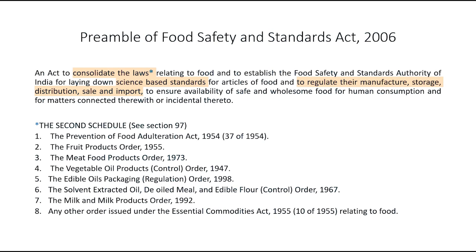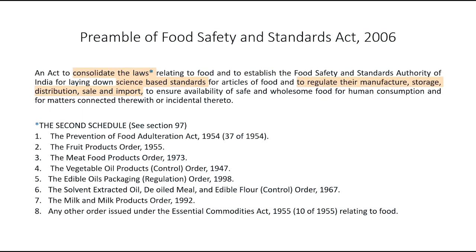Before we get to the preamble of the Food Safety and Standards Act, it is important for us to know and recognize the International Food Standards Body called the Codex Alimentarius Commission. This body has been established by the joint collaboration between the Food and Agricultural Organization and World Health Organization. India, in order to fulfill its international obligation, became a member of the Codex Alimentarius Commission in the year 1964.